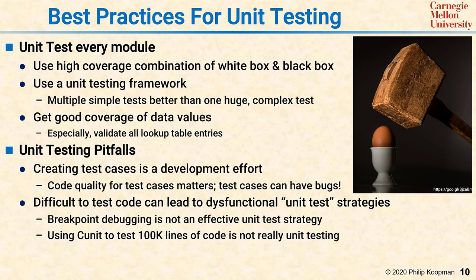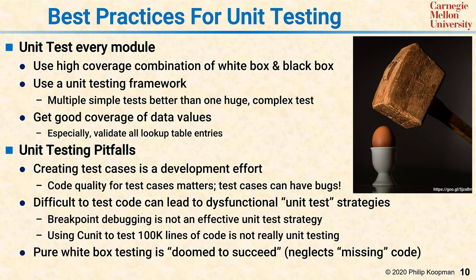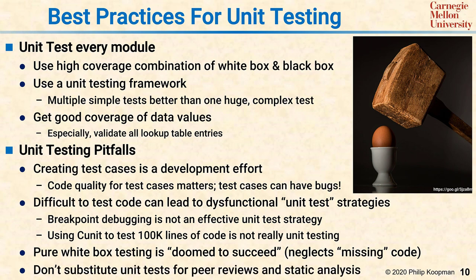Similarly, just because you're using CUnit doesn't mean you're doing unit testing. Using CUnit to test a 100,000-line blob of code is a sort of testing, but you're not going to get very good coverage — that's not really what we meant by unit testing. If you use only white box testing, it is doomed to succeed in the wrong way: there are tools that automatically generate tests covering all your lines of code, but those tools have no way of knowing what the values are supposed to be, and they're not going to generate code you forgot to put in, such as missing special cases. Finally, do not substitute unit testing for peer reviews and static analysis — you should be doing peer reviews, you should be doing static analysis, and unit testing should come after the code looks clean from both of those methods.